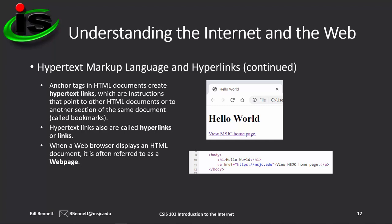The code for the link is on line 11 — we've added an anchor element. We start with an opening anchor tag. Inside that opening anchor tag is the attribute href, and the value assigned to it is the web address the browser will go to when the user clicks on the text. The href value is https://msjc.edu. Between the opening and closing anchor tags is the text the user sees on the web page: 'View MSJC Homepage.'